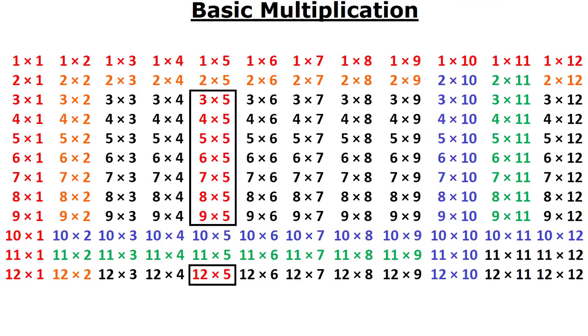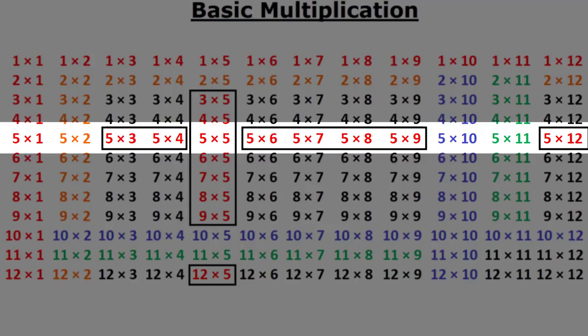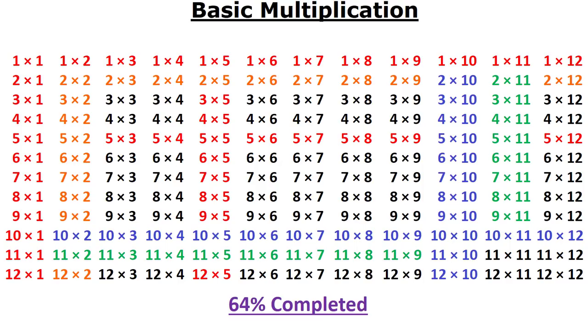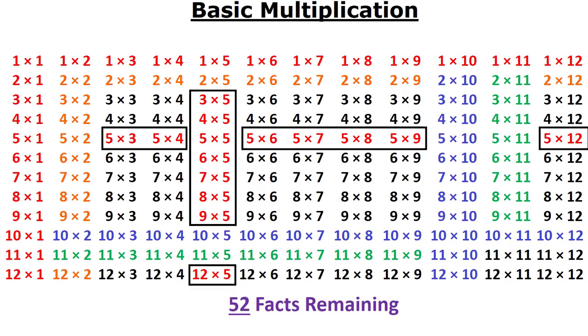Well, now that you know 1 times 5 all the way to 12 times 5. That means you also know 5 times 1 all the way to 5 times 12. So in total, you now know 92 multiplication facts from just 5 rules and there's only 52 remaining.